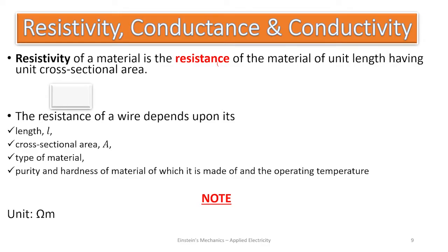What are we talking about? Resistivity gives you an idea of something like resistance. Conductivity and conductance give you an idea of something that conducts. So let's dive deep and look at resistivity. The resistivity of a material is the resistance of the material of unit length having a unit cross-sectional area. For any material, we want to know how it gives resistance to electrical energy or electrons per unit length.